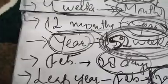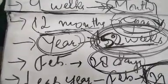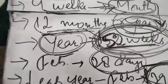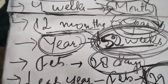I told you the names of the months: January, February, March, April, May, June, July, August, September, October, November, and December.